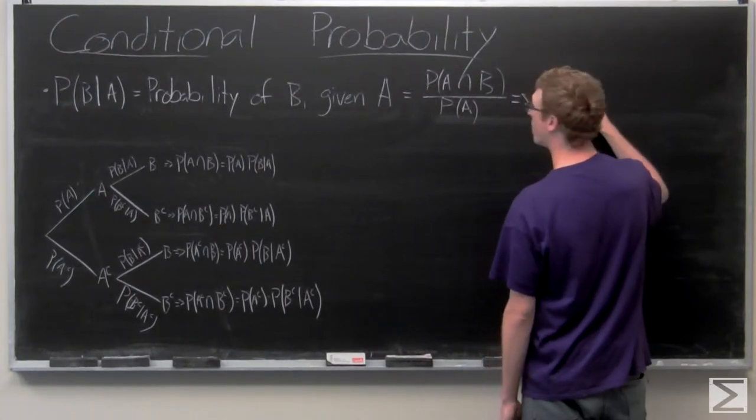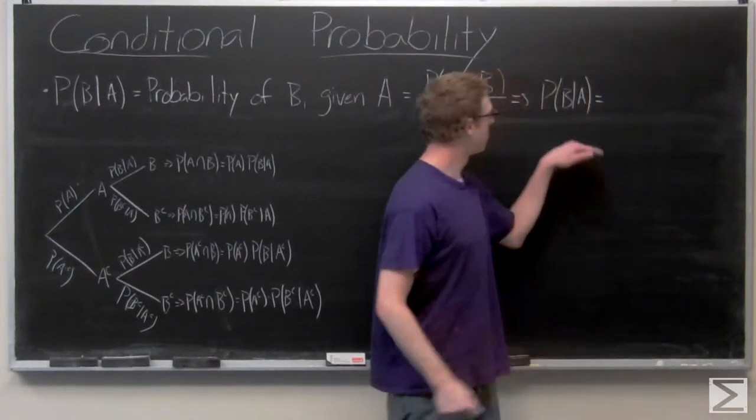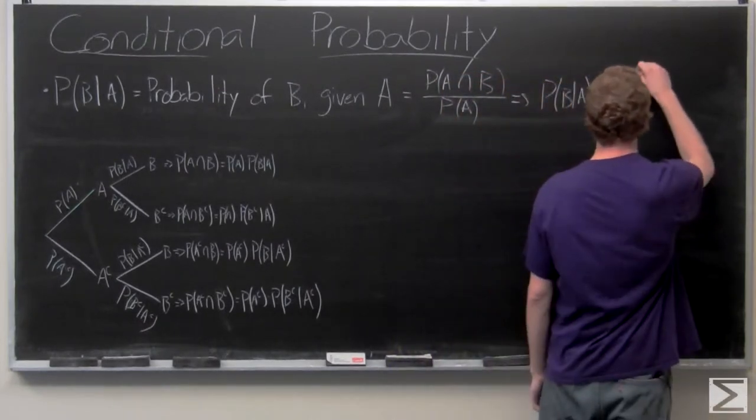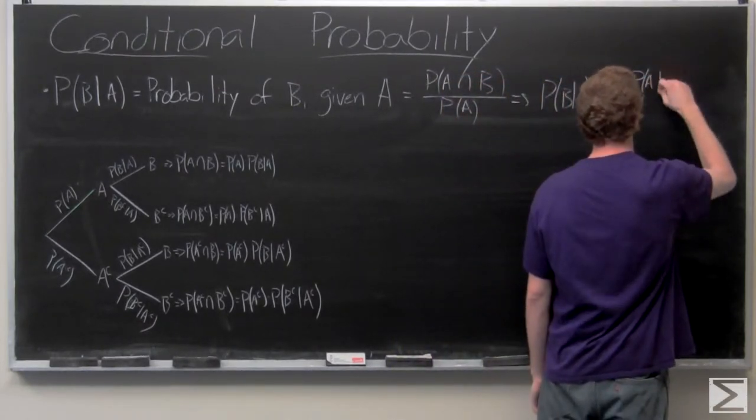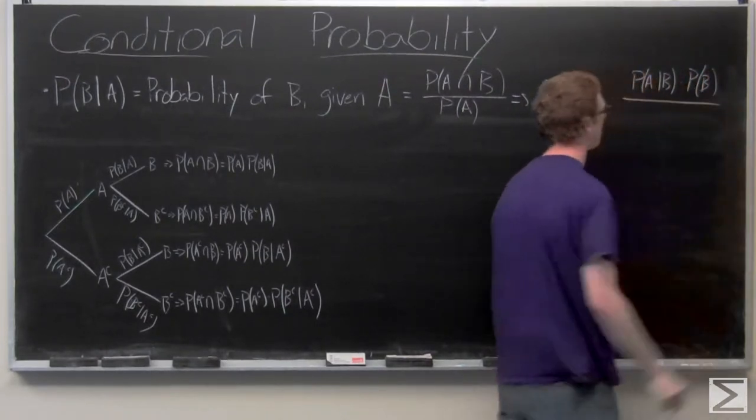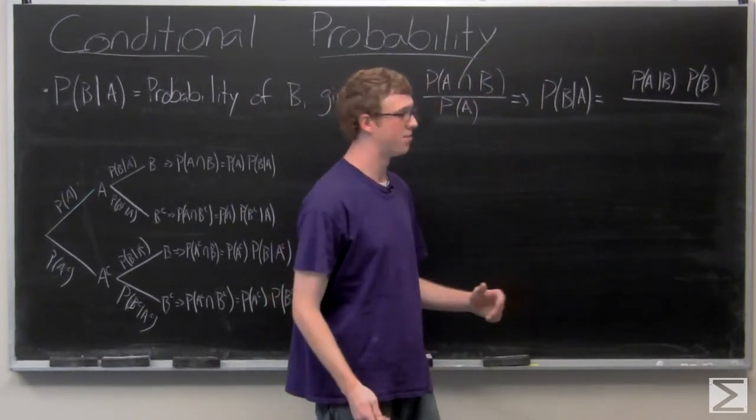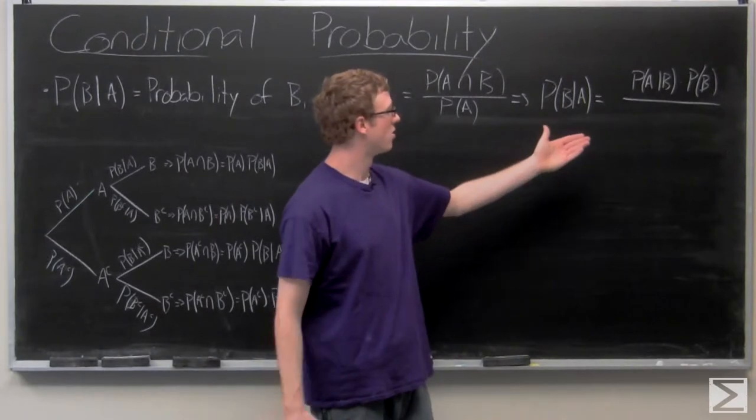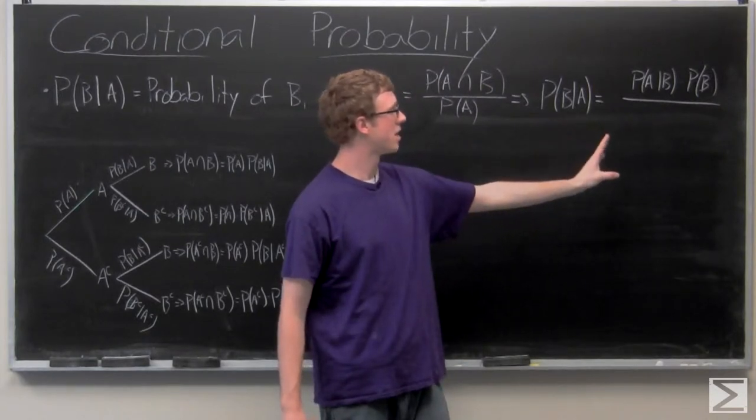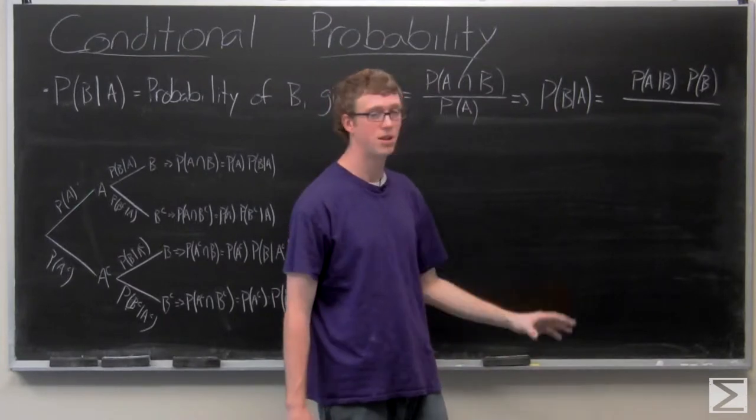So we have the probability of B given A. B given A is going to be the probability of A given B times the probability of B. And as we noticed in the last video, that is the probability of A and B. And then it's going to be all over the probability of A happening, which is A given B times B plus A given not B times not B.